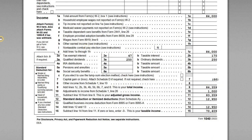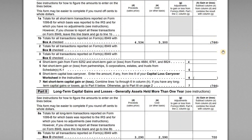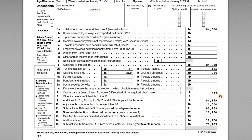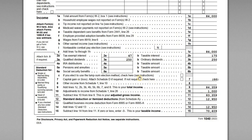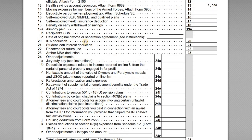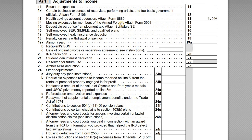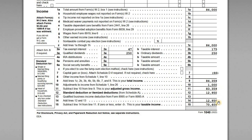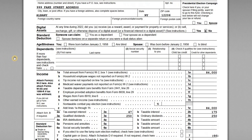On Schedule D we have the net capital amounts — $766 in short-term capital losses and $700 in long-term capital gains. The HSA contribution of $1,000 is reported as an adjustment to income, with Form 8889 included, reducing his adjusted gross income. Adam's federal AGI is $83,359. After the standard deduction, that gives us his federal taxable income — the baseline we work with when moving to the state return.